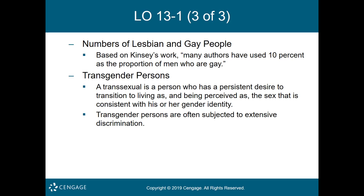A transgendered person is someone who identifies with or expresses a gender identity that differs from the one which corresponds to the person's sex at birth. For example, Laverne Cox was the first African-American transgender person to appear on television and was nominated for an Emmy Award for her work in Orange Is the New Black. She also came to campus as a guest speaker.